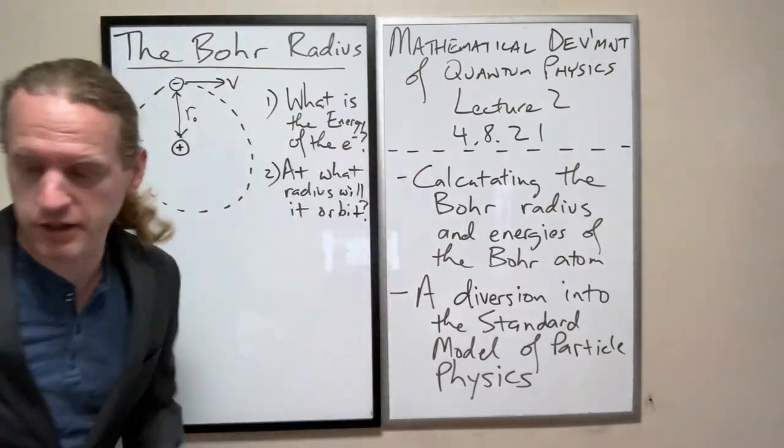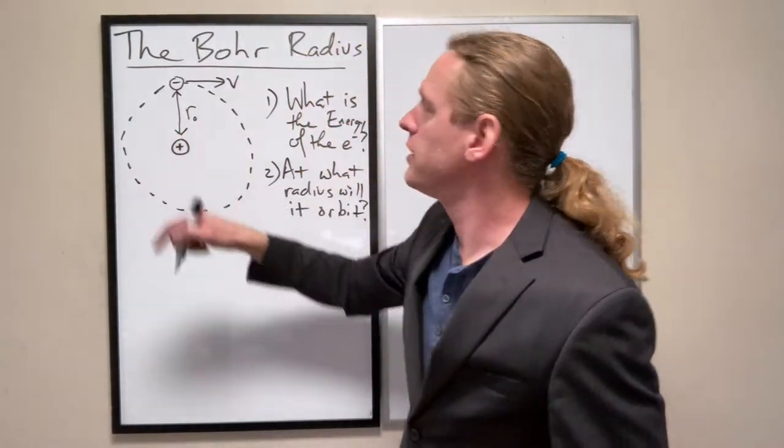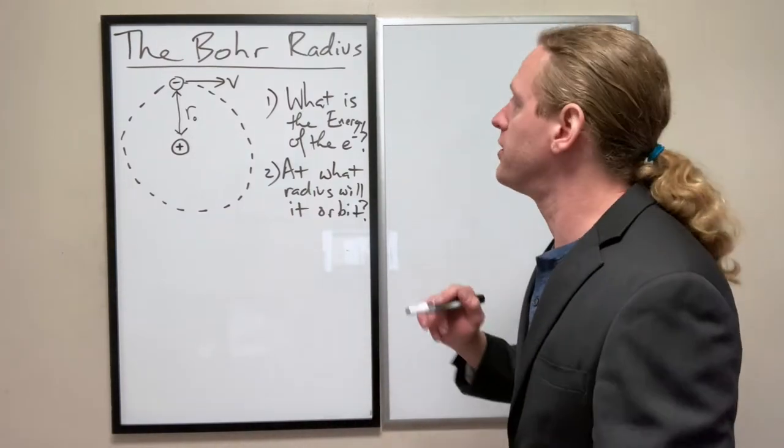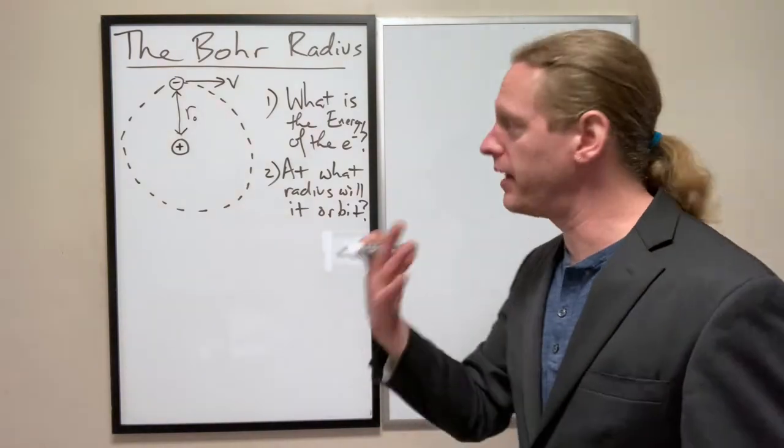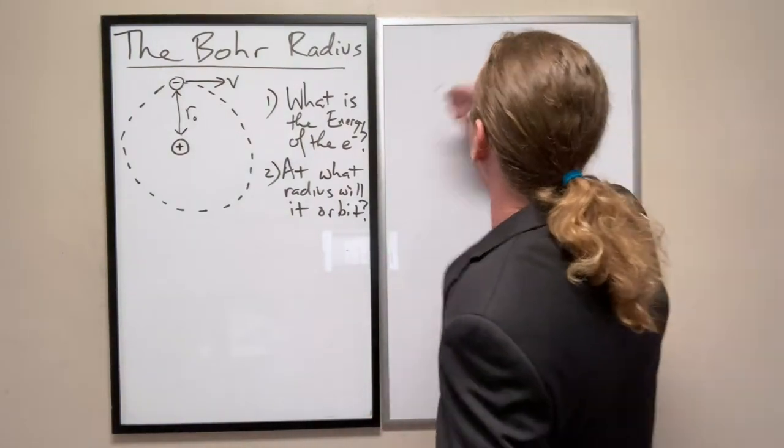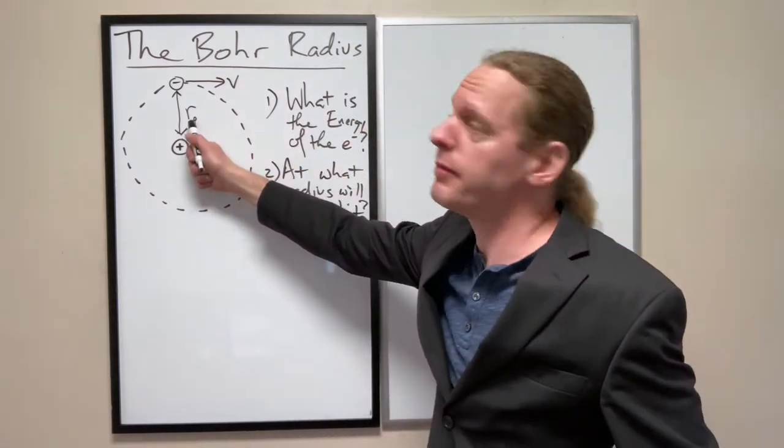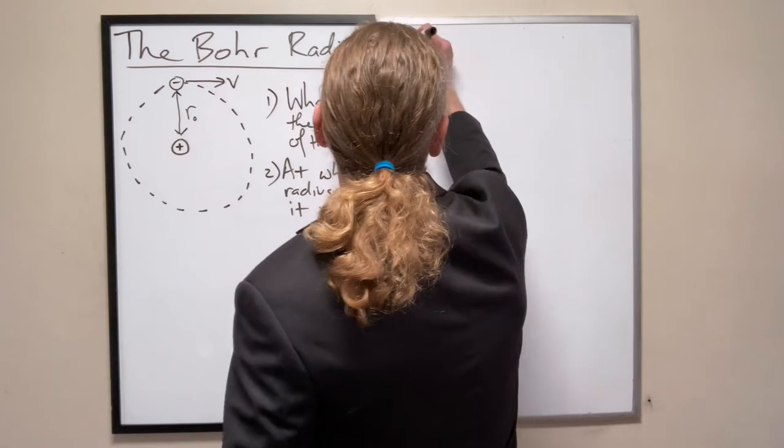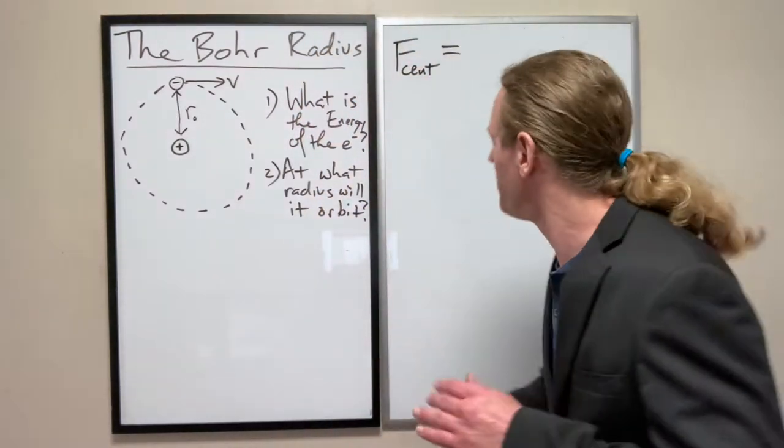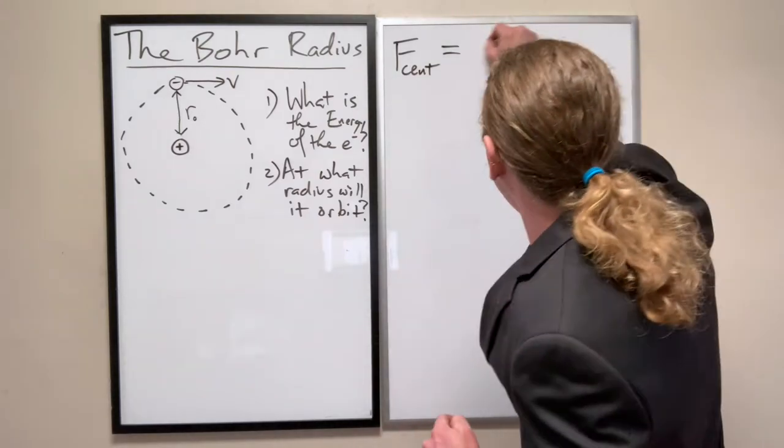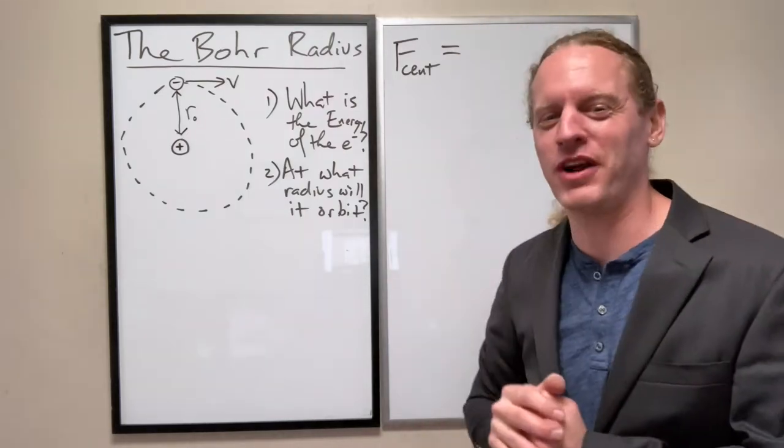We are going to view this as a uniform circular motion type of orbit. This is not actually what we think it does now, but the model is based on this basic assumption. See if you can recall from classical physics what that equation is here.